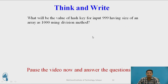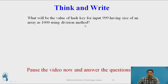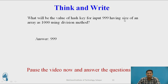Now you can pause the video and answer: what will be the hash key for input element 999 with an array of size 1000 using the division method? The answer is 999. Input value is 999, size of the array is 1000, so 999 mod 1000 equals 999. So 999 is the index where you store the input value 999.